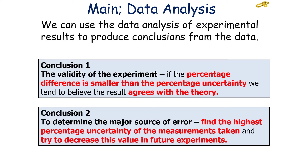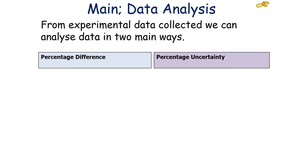The second conclusion you can discuss from your data is to determine the major source of error. In this instance, you'd find the highest percentage uncertainty of the measurements taken and try to decrease this value in future experiments.